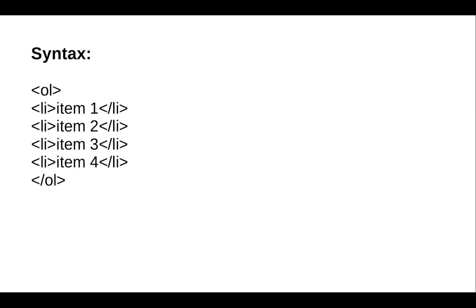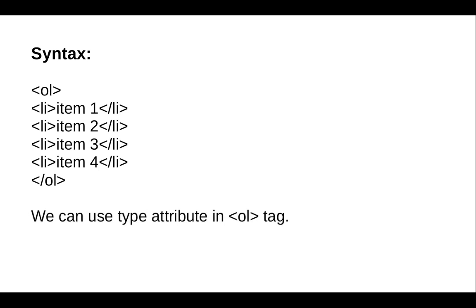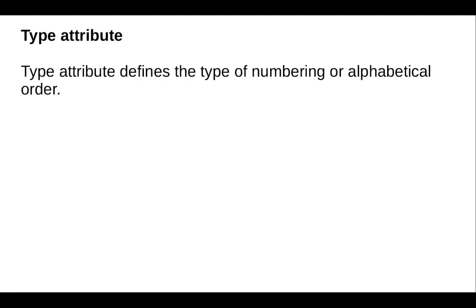An ordered list starts with the ol tag, and a list item starts with the li tag. The syntax is: first open the ol tag — ol stands for ordered list — then add one or more items. Open the li tag, add the item, then close the li tag. Finally, close the ol tag.